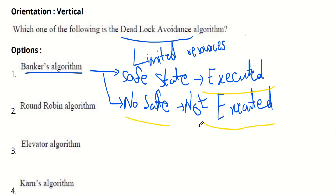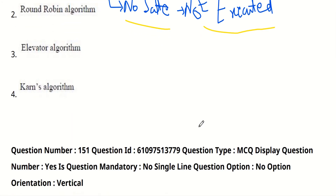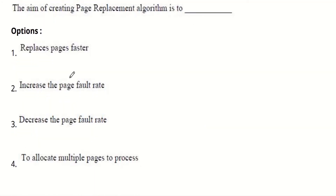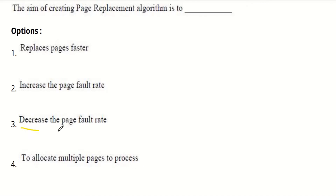The next question is: the aim of creating a page replacement algorithm is — options are to make the process page faster, decrease the page fault rate, or allocate multiple pages to a process. The answer is to decrease the page fault rate.